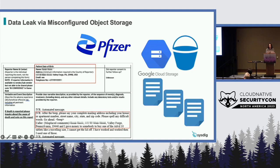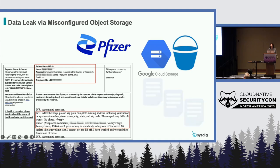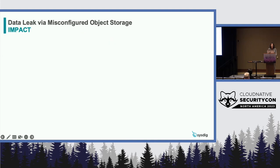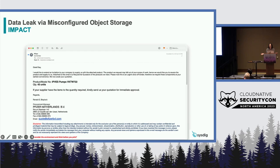VPN Mentor found the exposed files and reached out to Pfizer, who then secured the bucket. The impact is that this is the kind of information criminal hackers could use to conduct phishing campaigns. If I was trying to pretend to be Pfizer customer support and knew your personal information as well as your medical health history and a history of all those conversations, how hard would it be to just pretend to be Pfizer and follow up on the next step in the customer support chain? This information could also be used for identity theft campaigns and credit card fraud.